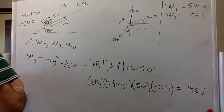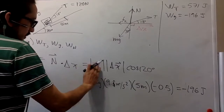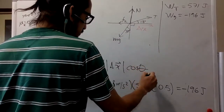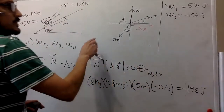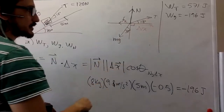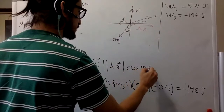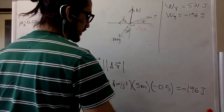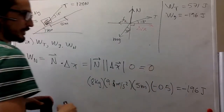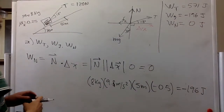The third one is the normal force. The work by normal force involves the cosine of the angle between the normal force and the displacement. By definition, the normal force is at a 90-degree angle to the surface, and the displacement is along the surface, so the angle between them is 90 degrees. Cosine of 90 degrees is zero, so the work done by the normal force is zero joules. That was the answer to part A.